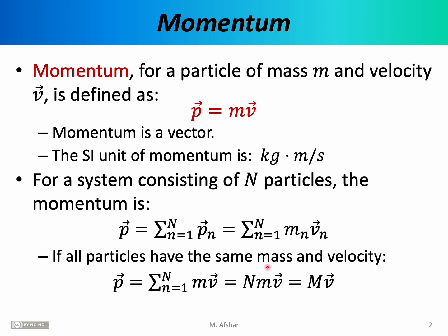In that case, this complicated summation simply becomes the mass of one atom times the velocity of one atom — that's the momentum of a single atom — times N, which is the number of atoms. And of course, the mass of a single atom times the number of atoms is the total mass of the system. So for this uniform iron cube sliding across the floor, we can just say the momentum is equal to the total mass times the velocity of the cube.